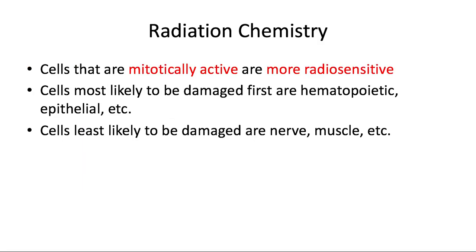An important concept for the board exam: cells that are mitotically active are more radiosensitive. The most radiosensitive cells are those that are highly metabolically active — such as sperm cells, gastrointestinal cells, skin cells, and bone marrow. The least radiosensitive are nerve cells and muscle fibers, since they're not constantly differentiating and dividing.